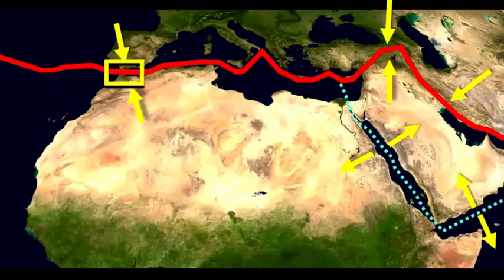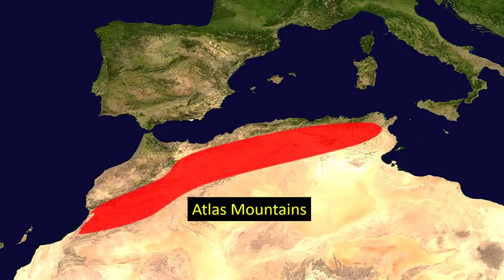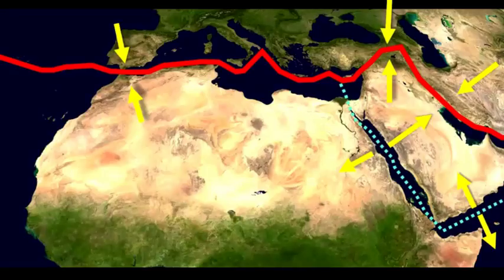Now let's get really excited and take a look at some of these plate tectonic collisions, starting with the Atlas Mountains, where we have the Eurasian plate colliding with the African plate. Along that plate boundary, in a very similar shape — kind of parallel to that red line — is the Atlas Mountains. One of the famous countries in this area is Morocco, which we can see just across the Mediterranean from Spain and the Iberian Peninsula and Europe.